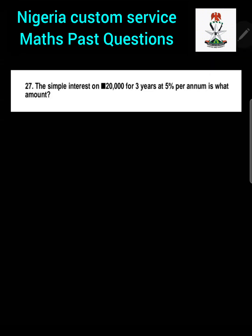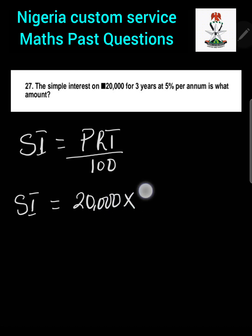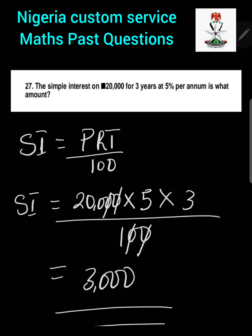Question 27: Find the simple interest on 20,000 naira for three years at 5% per annum. The formula is: Simple Interest equals Principal multiplied by Rate multiplied by Time, all over 100. Substituting: 20,000 multiplied by 5 multiplied by 3, divided by 100. The zeros cancel, giving 200 multiplied by 5 equals 1,000, then 1,000 multiplied by 3 equals 3,000 naira.